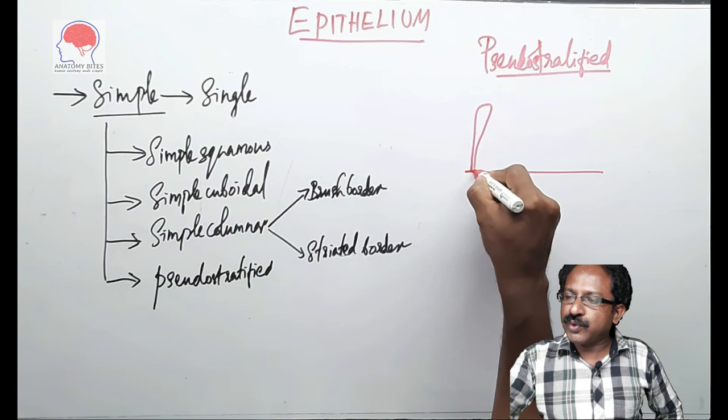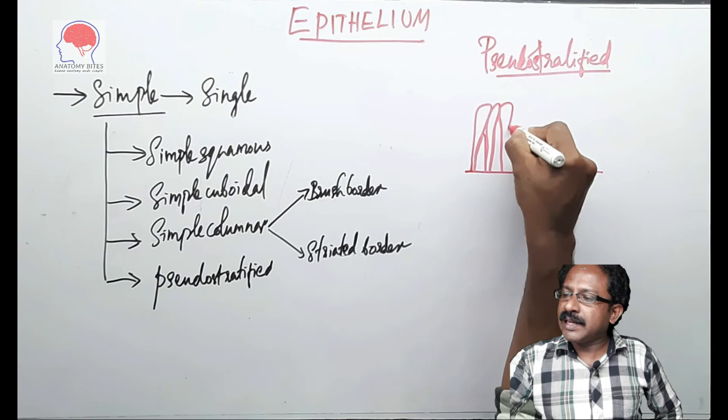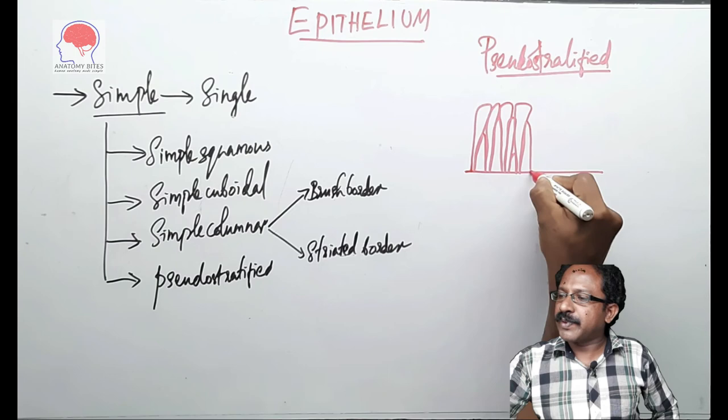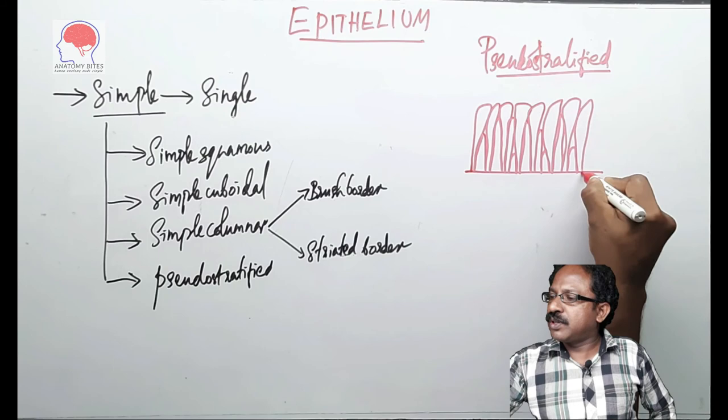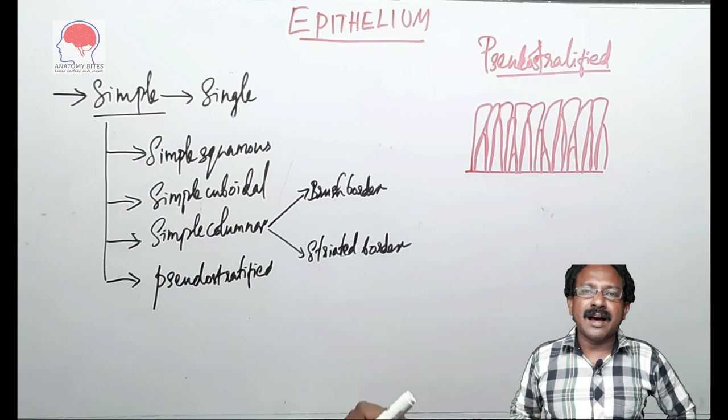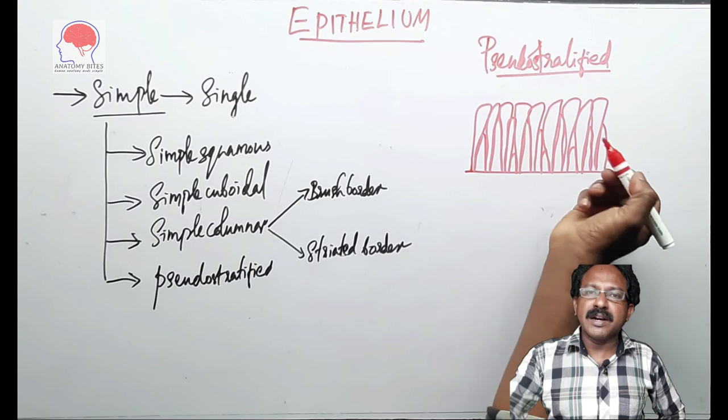And you can see that there are cells which are of varying height and the thickness of the cell is different in its different parts. There are tall cells, medium cells, short cells, tall cells, medium cells, tall cell, small, tall, medium. There is no specific arrangement pattern but the cells are like this. It appears to be of different height so that the breadth of the cell in different parts is different.